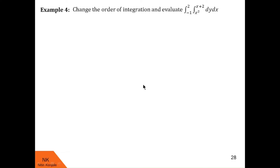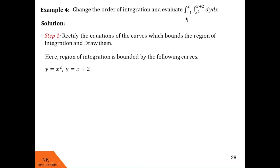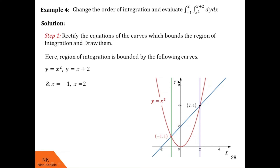Here we are asked to change the order of integration and evaluate the double integration of dy dx over the inside integral limits x squared to x plus 2 and outside integral limits minus 1 to 2. In step 1, we identify the bounding curves: y = x squared, y = x plus 2, x = minus 1, and x = 2. Drawing these: this is y = x squared (a parabola), this is y = x plus 2 (a line), this is x = minus 1, and this is x = 2. These four curves bound the region of integration.